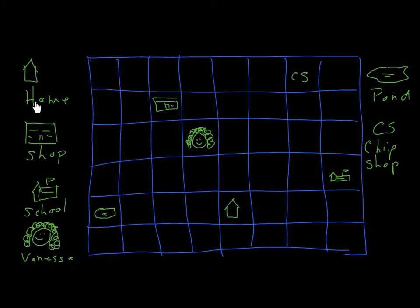So for example, this symbol here means home. This symbol is the shop. This symbol is the school, which is here. The shop is over here. Home is here. This is Vanessa. This is the little girl we are going to give directions to. This picture here means pond and CS chip shop is there.